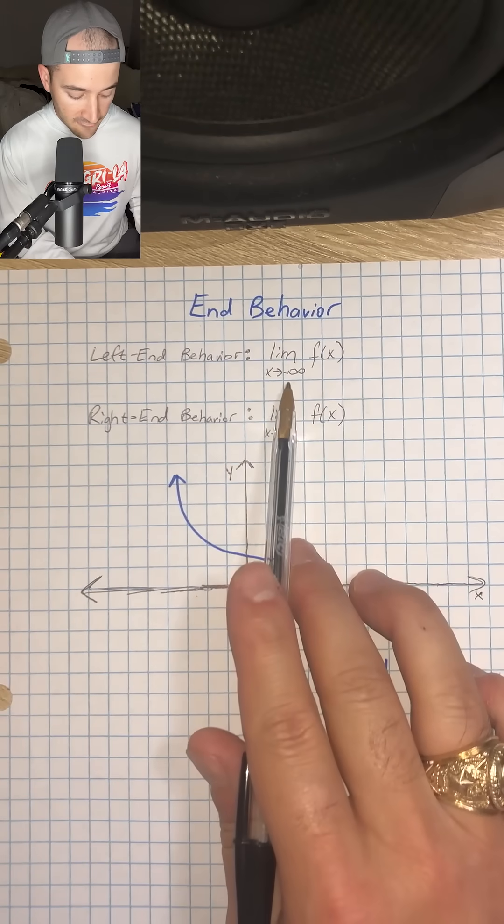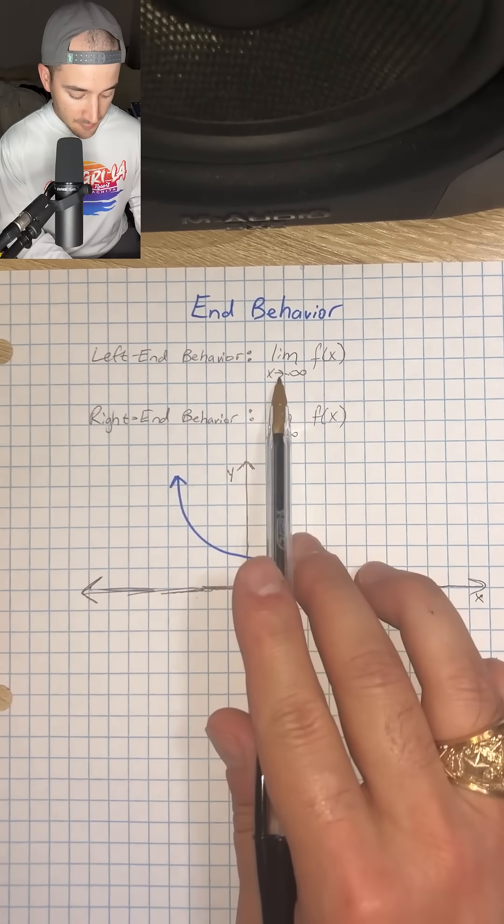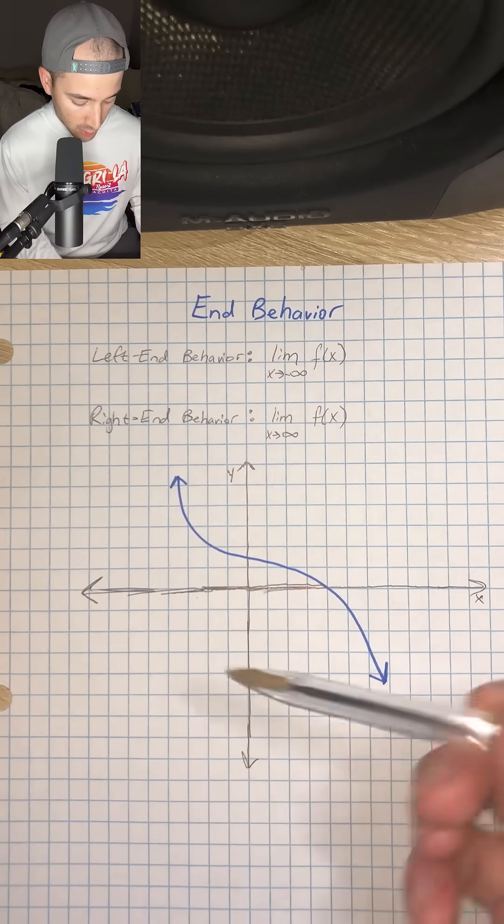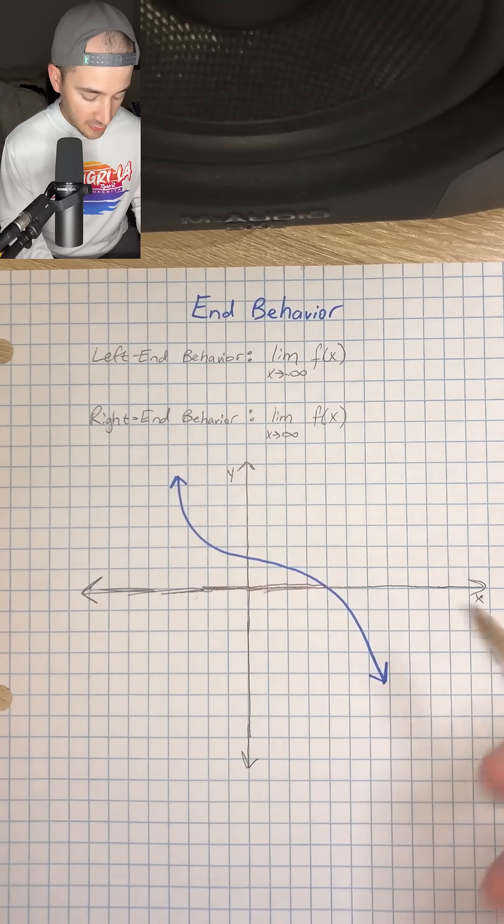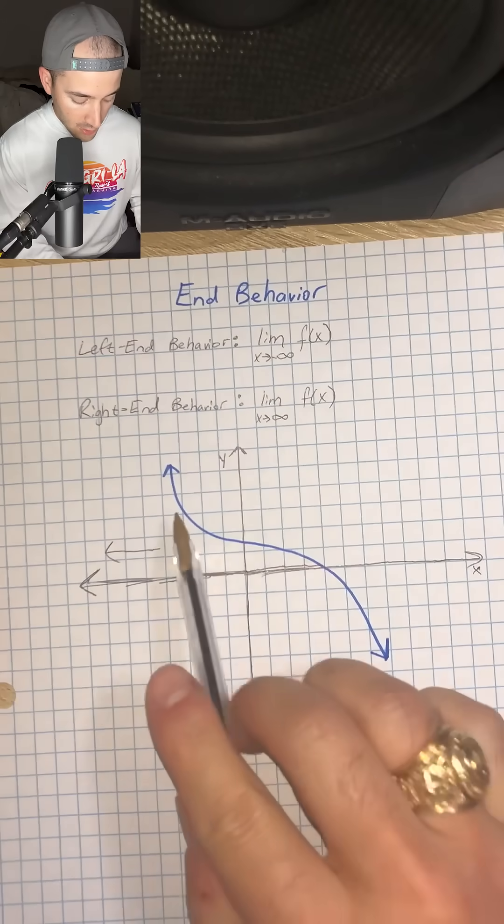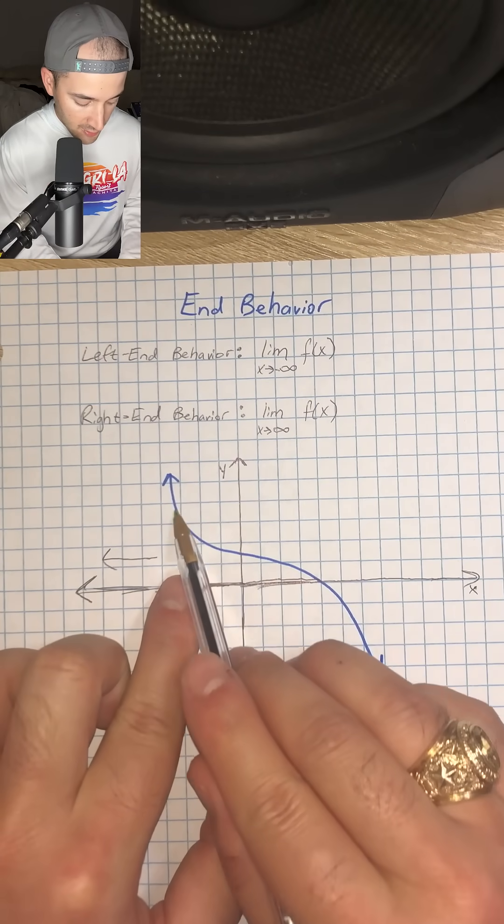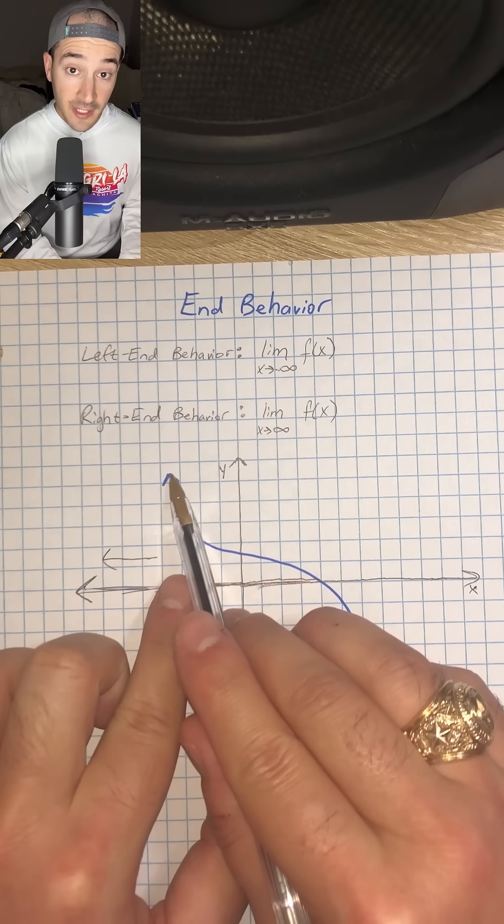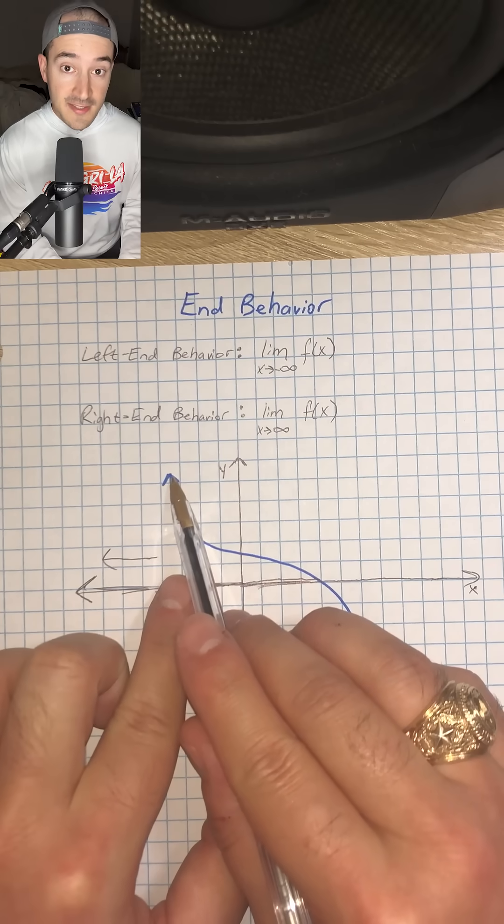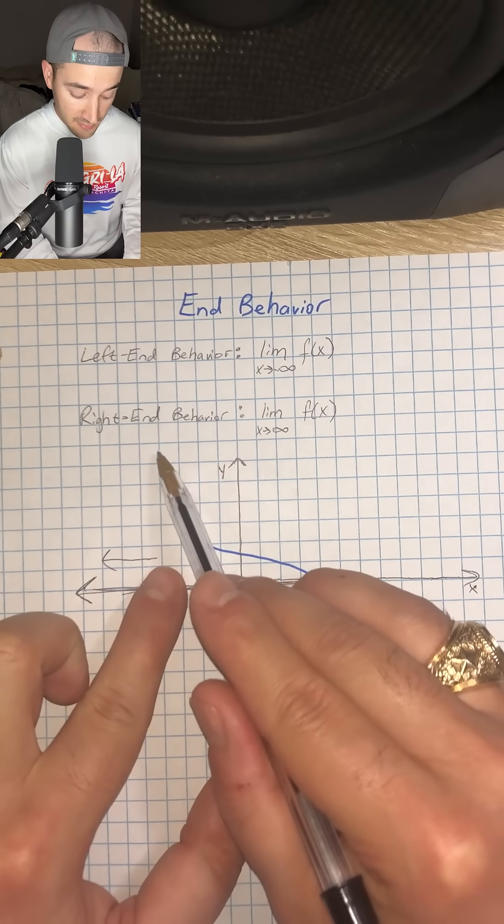So let's go ahead and find the limit for this function. As x approaches negative infinity, meaning we're going towards negative infinity on the x-axis, which would be this way, our function as we move to the left is increasing, and it's going to keep increasing as it goes towards infinity.